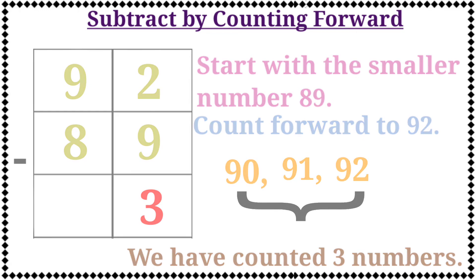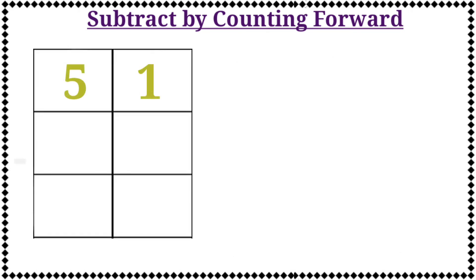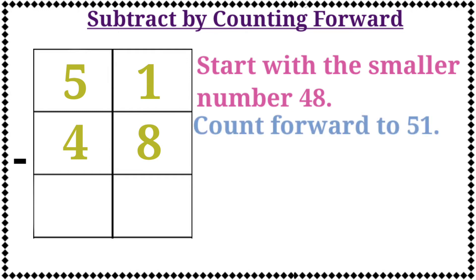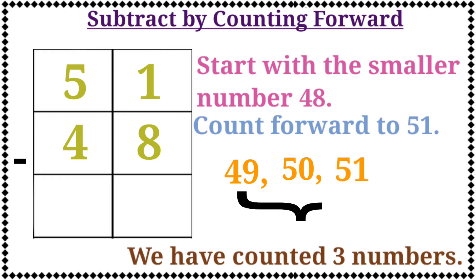The next example is 51 minus 48. Start with the smaller number 48, then count forward to 51. Let's count: 49, 50, 51. Now we have counted 3 numbers. Therefore, the answer is 51 minus 48 is equal to 3. Let's write the number 3 in the box.